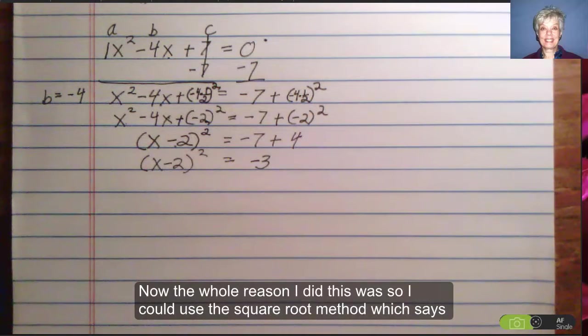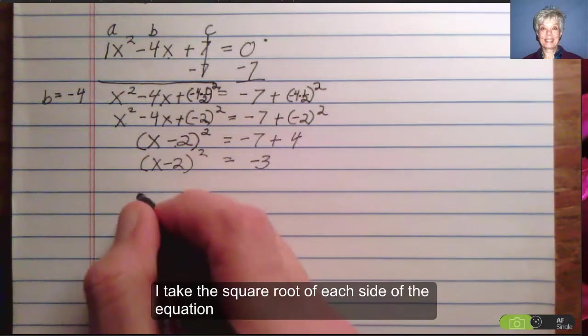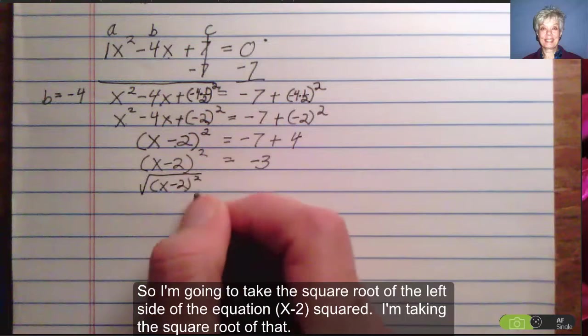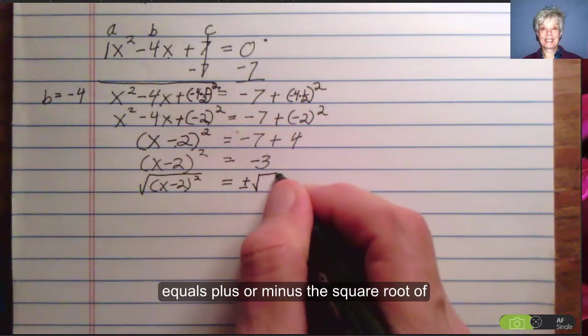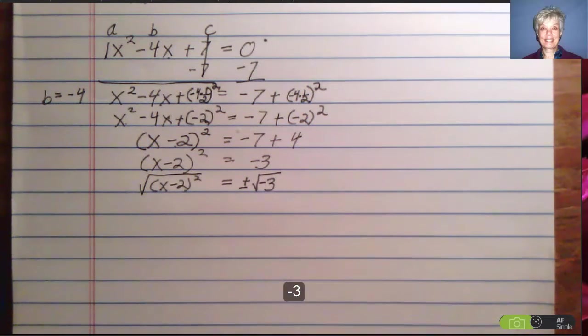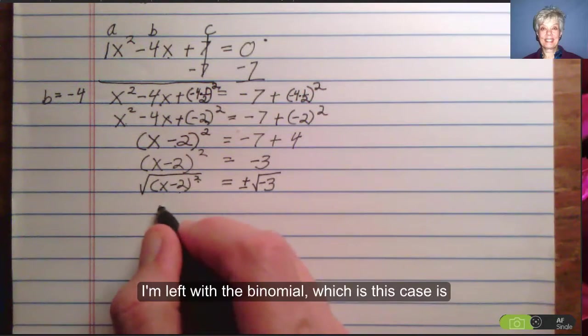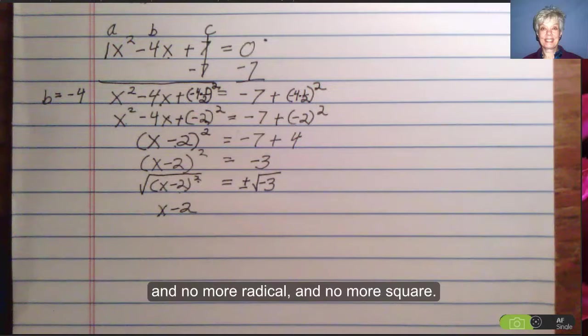Now the whole reason I did this was so I could use the square root method, which says I take the square root of each side of the equation. So I'm going to take the square root of the left side of the equation, x minus 2 parentheses squared. I'm taking the square root of that equals plus or minus the square root of negative 3. Now when I take the square root of a binomial squared, I'm left with the binomial, x minus 2, and no more radical and no more square.